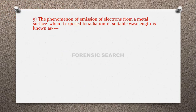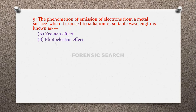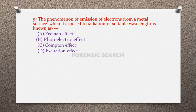Question 5: The phenomenon of emission of electrons from a metal surface when it is exposed to radiation of suitable wavelength is known as — option A: Zeeman effect, option B: photoelectric effect, option C: quantum effect, option D: excitation effect. The correct answer is option B — photoelectric effect, and this effect was discovered by Albert Einstein.